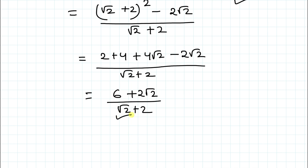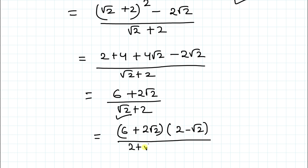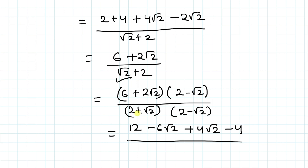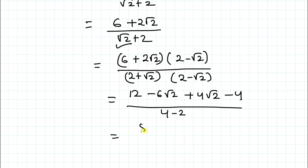Since we have a radical value in the denominator, we rationalize it. We multiply (6 + 2√2) by (2 − √2) and in the denominator multiply (2 + √2) by (2 − √2). Expanding: 12 − 6√2 + 4√2 − 4 divided by (4 − 2), which gives (8 − 2√2) divided by 2 = 4 − √2. So the final answer is 4 − √2.